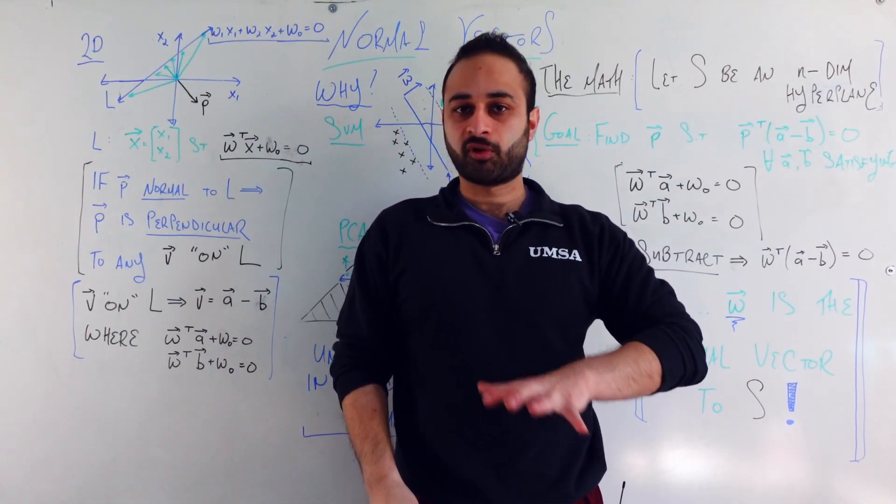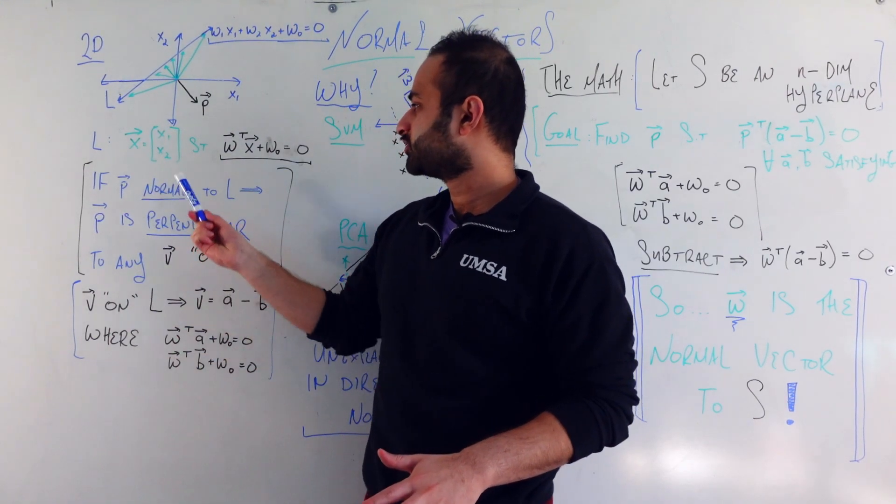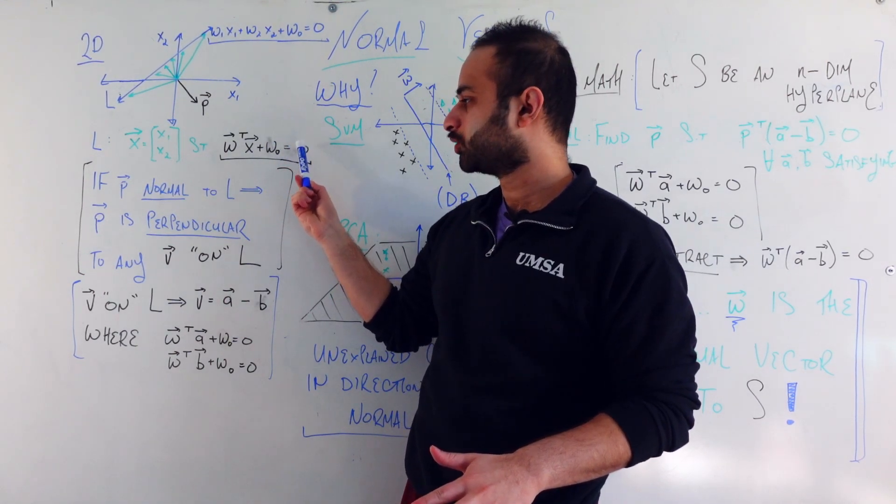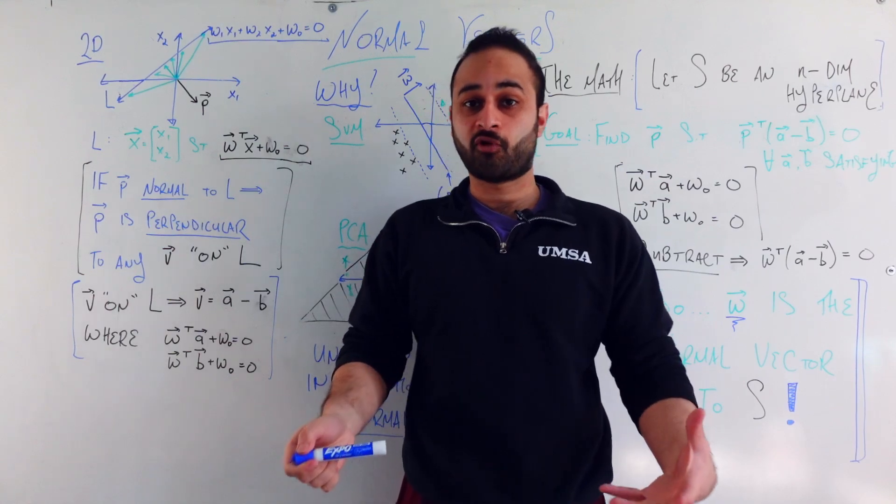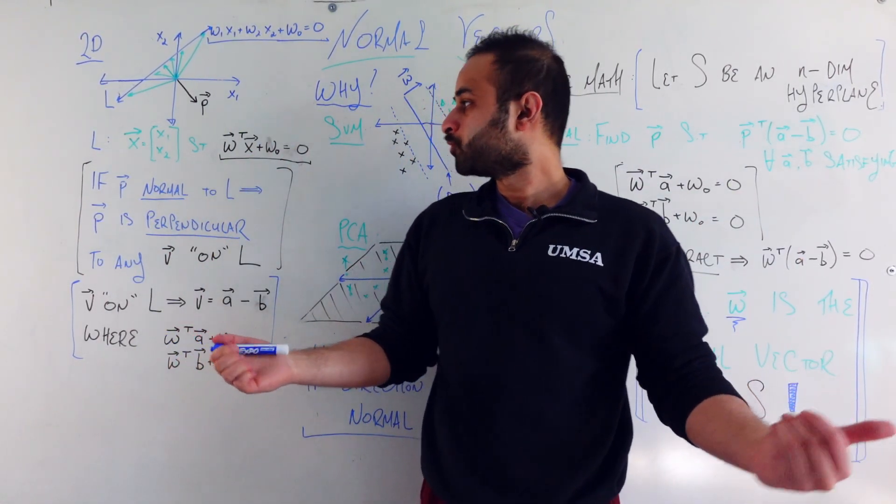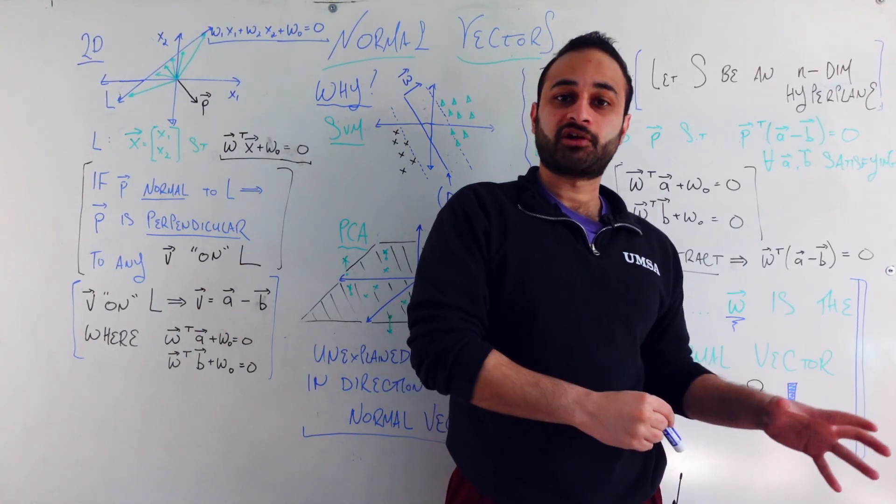But coming back to two dimensions for a moment. We have this line here, and like we said the line is characterized as all x, who satisfy w transpose x plus w0 is equal to 0. This little equation here is just a compact vector form of this more written out expression up there. So we know that's the definition of the line. Now let's bring in the concept of a normal vector to that line.